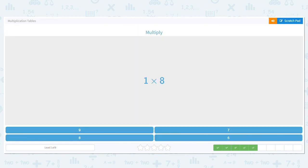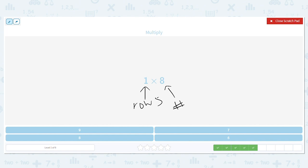1 times 8. What would 1 times 8 be? Now, if you need a visual for this to understand how we're getting 8 as our answer, what we do is we say 1 tells me how many rows and the 8 tells me the number in each row.